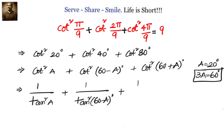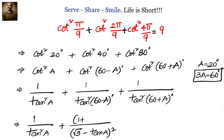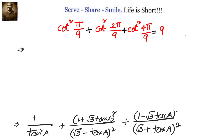We have 1 by tan square A plus 1 by tan square of 60 minus A plus 1 by tan square of 60 plus A. Using the formula tan of A plus B equals tan A plus tan B over 1 minus tan A tan B, and tan A minus B equals tan A minus tan B over 1 plus tan A tan B, and knowing tan 60 equals root 3, we substitute to get: 1 plus root 3 tan A whole square divided by root 3 minus tan A whole square for cot square 60 minus A. Similarly, 1 by tan square 60 plus A is 1 minus root 3 tan A whole square divided by root 3 plus tan A whole square.